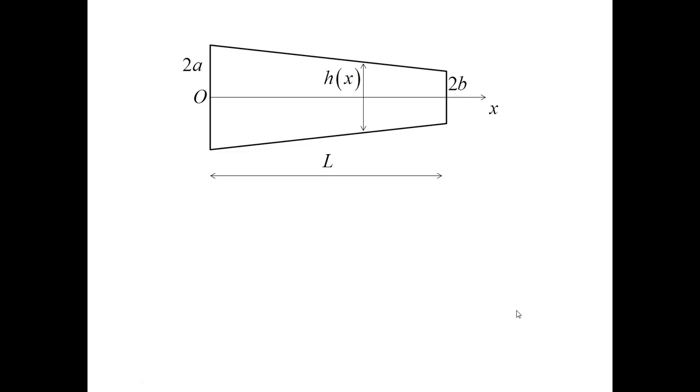Now, let me calculate H of X. I will begin with observing that H of X must be a linear function, simply because the cross-section is bounded by straight lines. Therefore, I simply express H of X as alpha X plus beta, where alpha and beta are parameters to be determined.